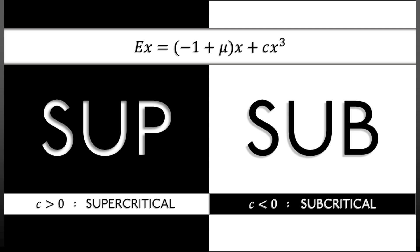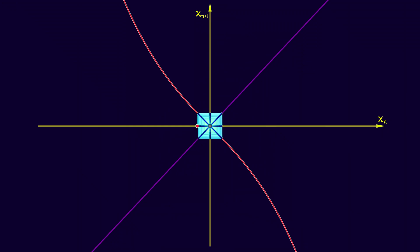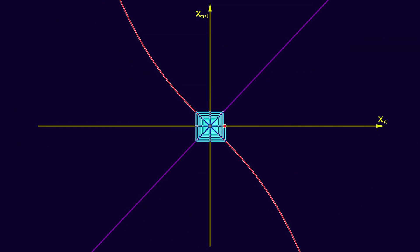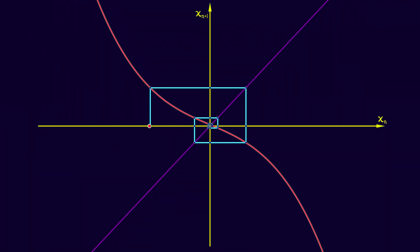But when c is negative, we have a subcritical period doubling bifurcation. And what that looks like is that on one side of the bifurcation, you have an unstable equilibrium that past the bifurcation becomes stable and throws off an unstable period two orbit. Very, very similar to what is happening with a subcritical pitchfork bifurcation.